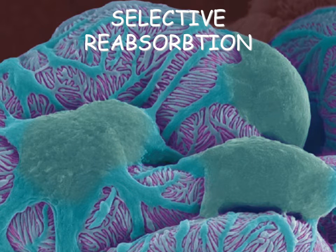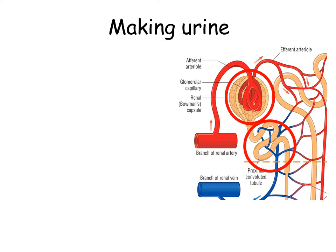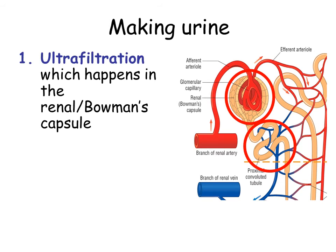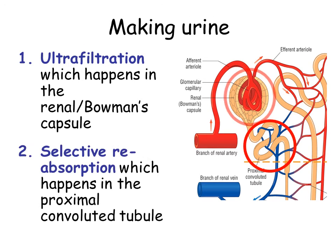In this video I'll be explaining how selective reabsorption works. The first two stages in making urine are ultrafiltration, which is basically where molecules are filtered out of the blood and that happens in the Bowman's capsule. The second part is selective reabsorption, which involves reabsorbing some of those useful molecules which were filtered out of the blood during ultrafiltration, and this takes place in the proximal convoluted tubule.